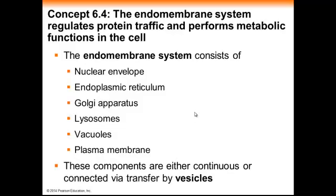Extending off from the nuclear envelope, we get into what's called the endomembrane system. The endomembrane system is a very important set of structures in the cell because it regulates protein production and movement and also performs a number of metabolic functions. There are six primary structures within the endomembrane system: the nuclear envelope, the endoplasmic reticulum, the Golgi apparatus, lysosomes, vacuoles, and the plasma membrane. These components are connected via transfer by vesicles, which are little membranous bags.